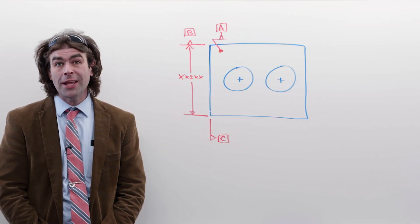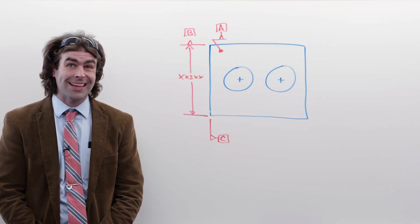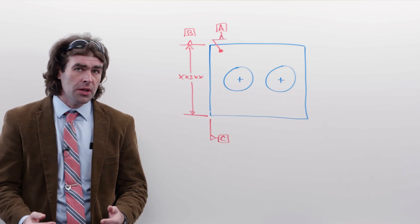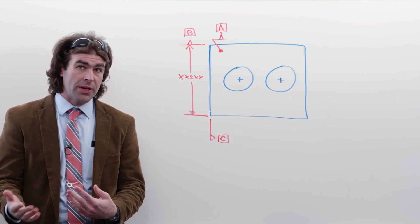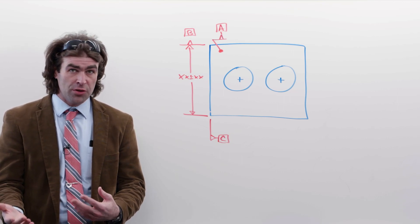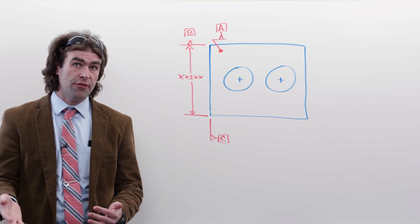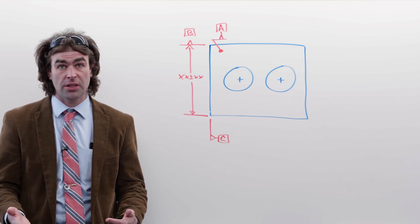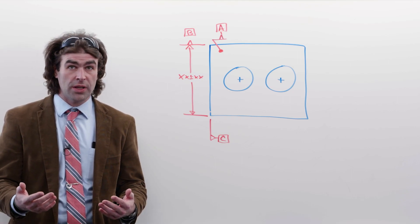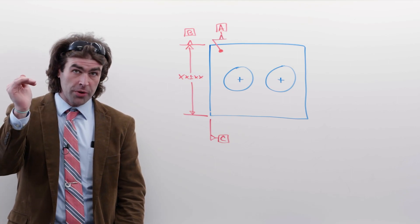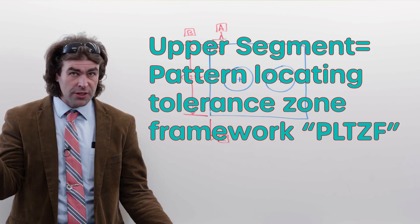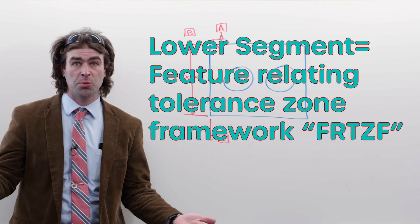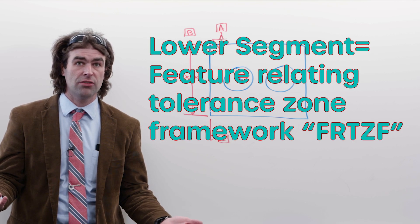In this video I want to answer a question from a YouTube comment. The question is: can you use MMC and RFS with a composite position? Can you have the upper segment be regardless of feature size and the lower segment be at maximum material condition?